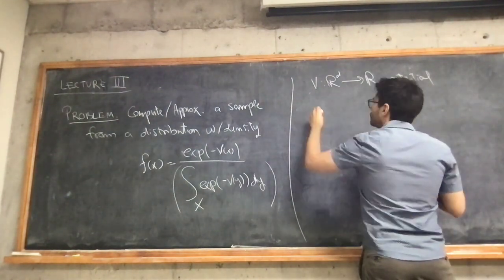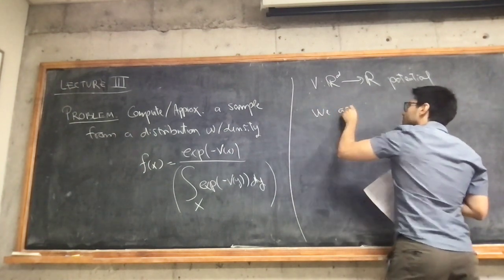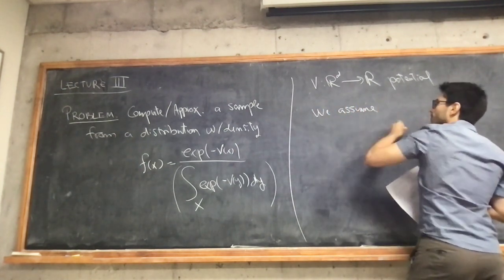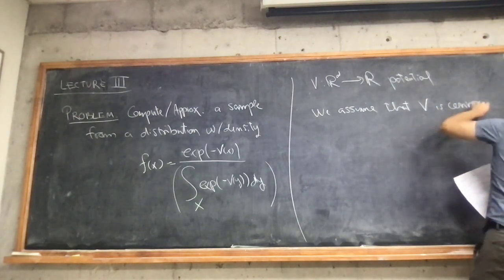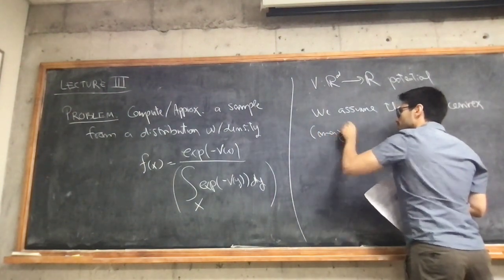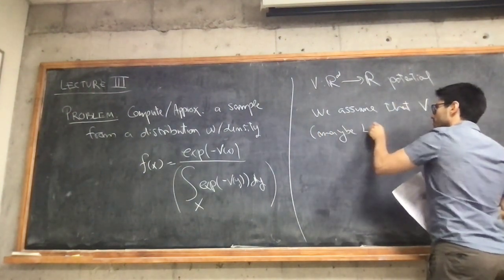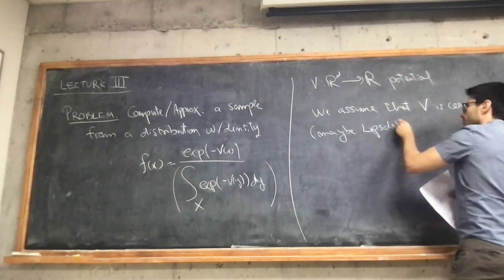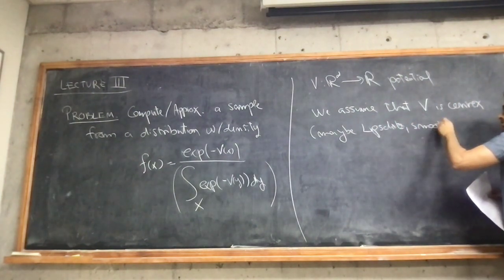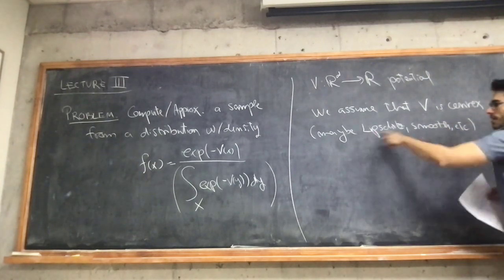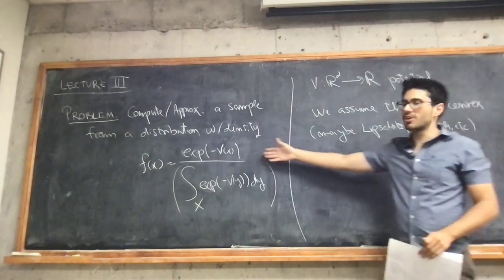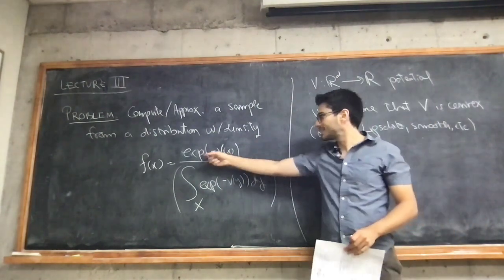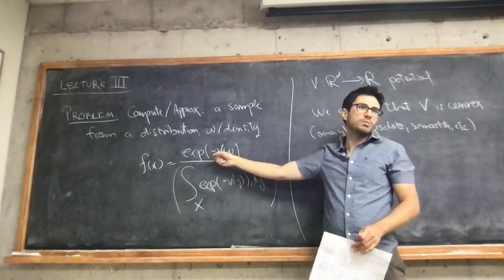We'll further assume that v is convex and maybe Lipschitz smooth, et cetera. Hopefully these properties allow us to get more precise complexity results. The main assumption we want to make is that v is convex, which is equivalent to saying that this distribution is log-concave — in the sense that taking the logarithm of this density gives minus v, which is going to be a concave function.